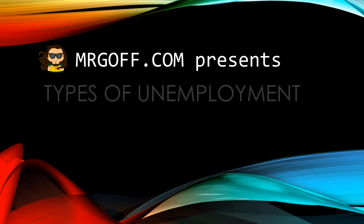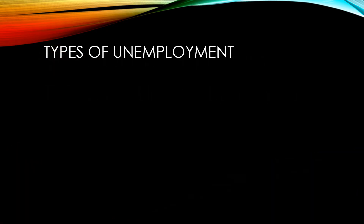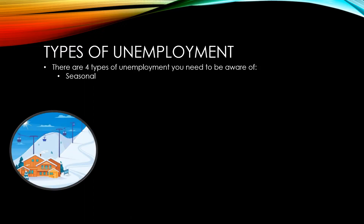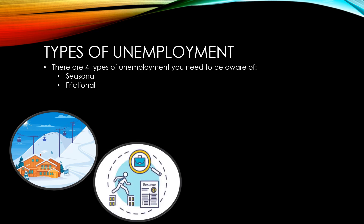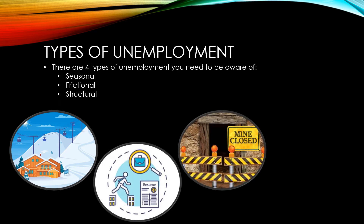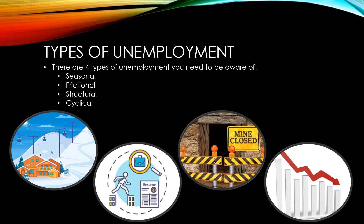Hello and welcome to another GCSE Economics video with me Mr Gough from MrGough.com. Today's video will focus on the types of unemployment. There are four types, or causes if you like, of unemployment that you need to be aware of: seasonal unemployment, frictional unemployment, structural unemployment, and cyclical unemployment. We're going to take a look at each of these in more detail now.